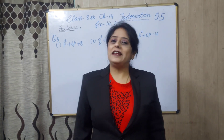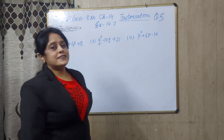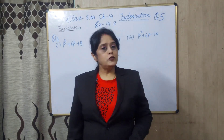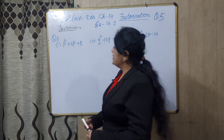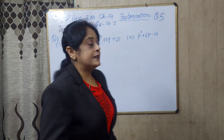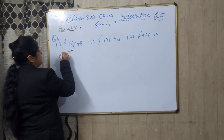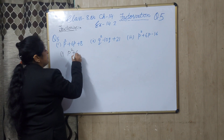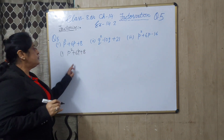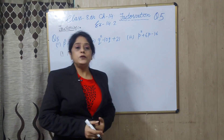Hello everyone. Today I will explain question number 5 of class 8, exercise 14.2. In the previous exercise you learned how to use identities to factorize, but here we will use another method: splitting the middle term. The first part is p squared plus 6p plus 8. If you see, it is not a perfect square, so we cannot use an identity.